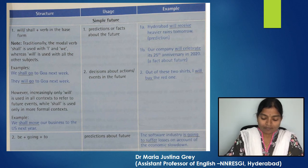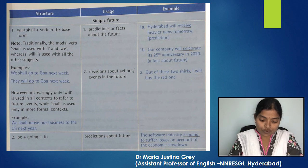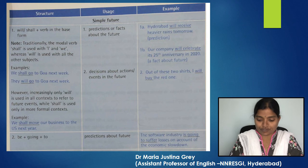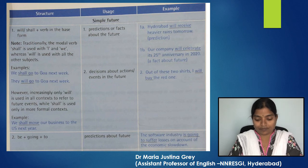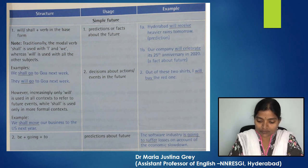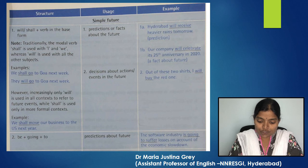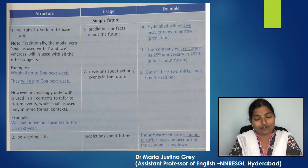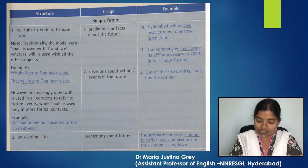Simple future tense is used to talk about predictions or facts about the future. For example, 'Hyderabad will receive heavier rains tomorrow' — a prediction — or 'Our company will celebrate its 25th anniversary in 2020' — a fact about the future. Note: since this book was written long ago, you could change the year according to the time at which you read this. Simple future tense is also used to talk about decisions about actions or events in the future. For example, 'Out of these two shirts, I will buy the red one.'